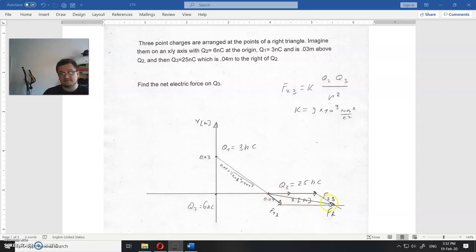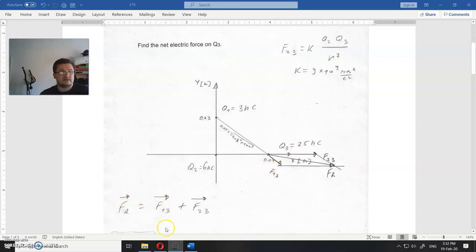And now, as you can see, FR is directed somewhere downwards below the x-axis, but that is not the point. You don't need to find that angle. You just need to find the magnitude of the force, that is the vector sum of these two forces, F1,3 and F2,3.